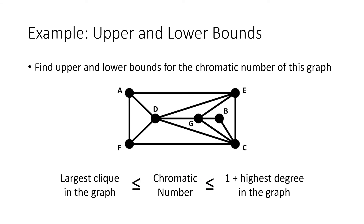So if we had this graph, what would our bounds say about the chromatic number? The largest clique in the graph is four — that clique of four vertices D, E, G, and C. There are not five vertices in this graph that are all mutually connected to each other. What about the other end of our spectrum? What's the highest degree in the graph? D here has degree five, and if we look at all of our other vertices, that's going to be the highest. C also has degree five, but that is the highest degree in the graph. So one plus five equals six.